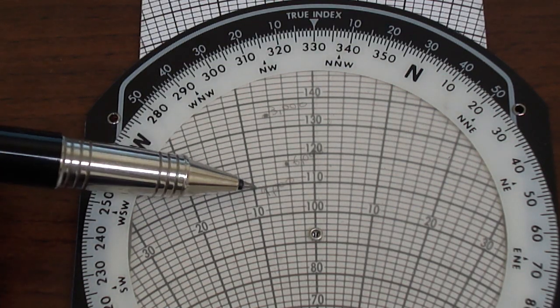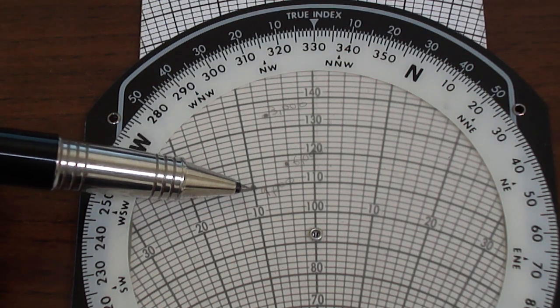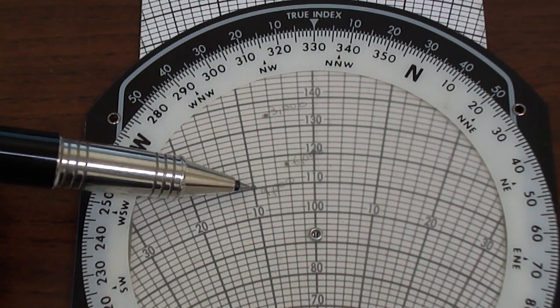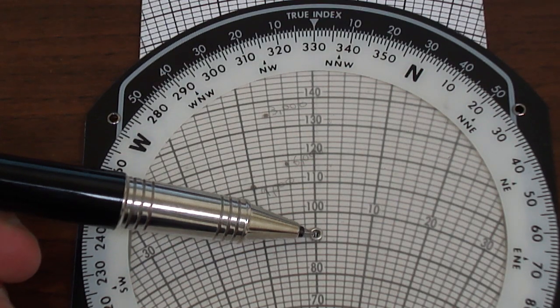Here we already have 9,000 feet aligned with 110 knots and we'll see that the wind correction will be minus 10 and the ground speed will be around 92 knots.